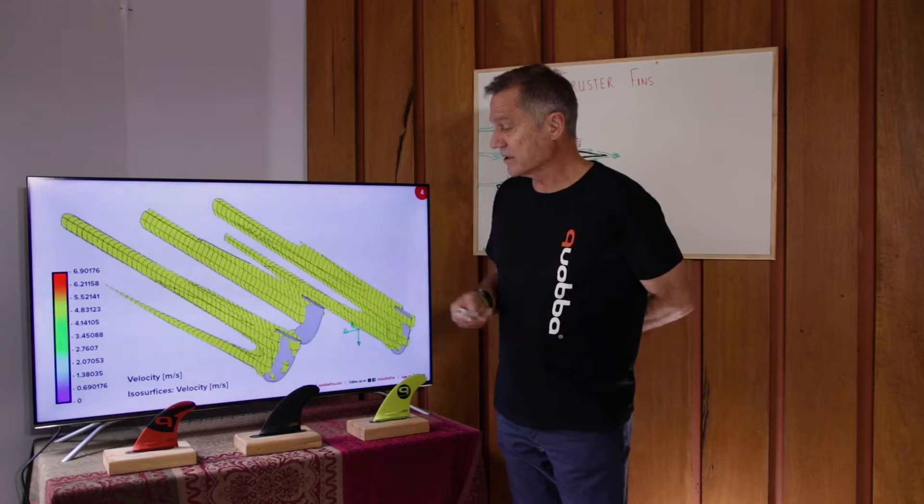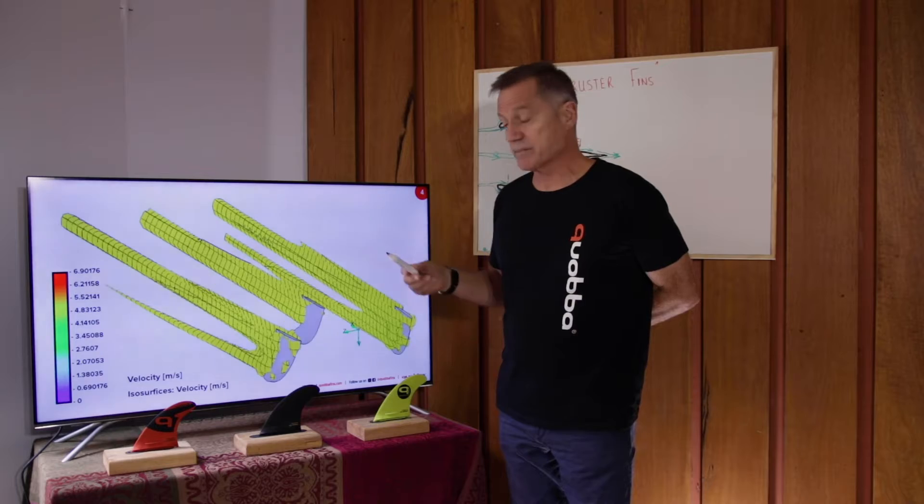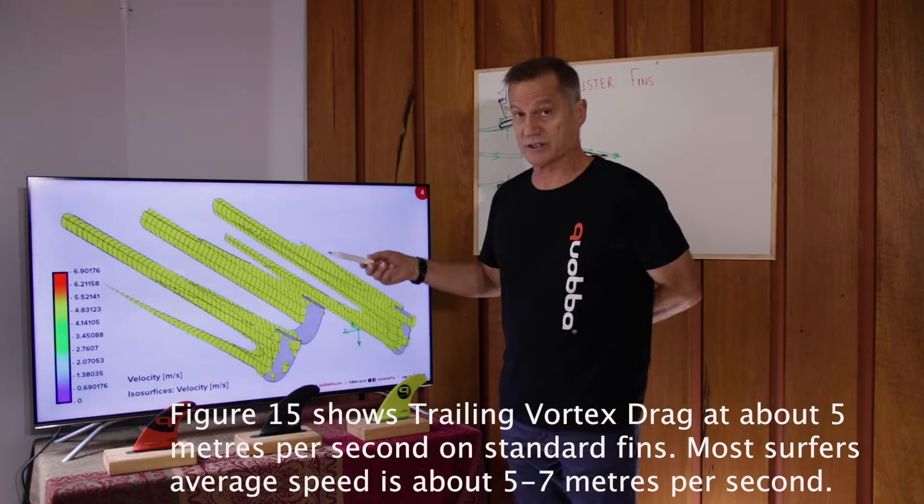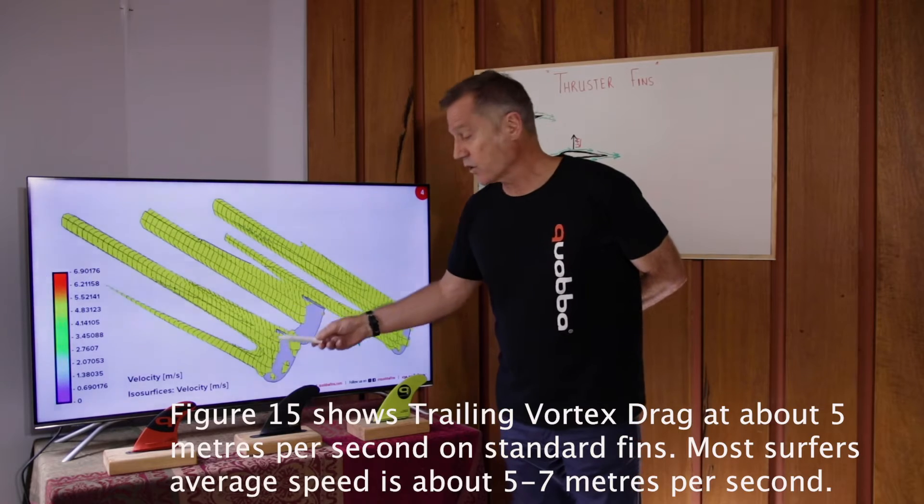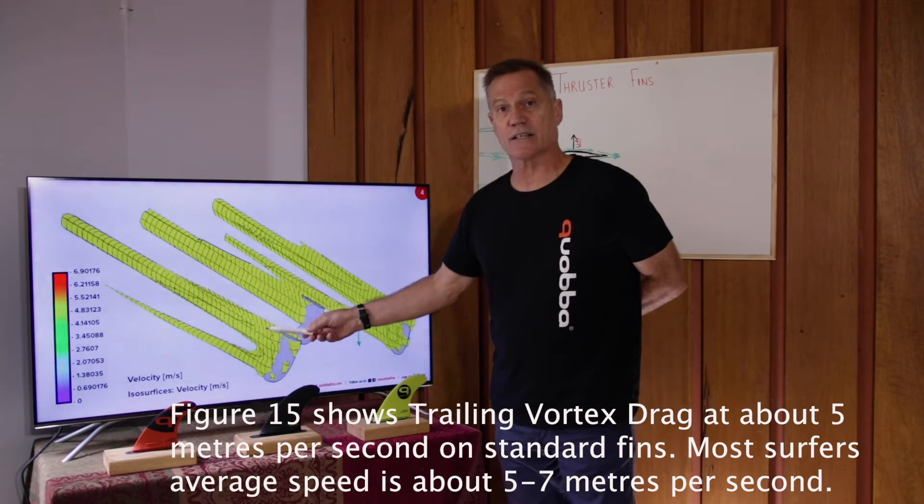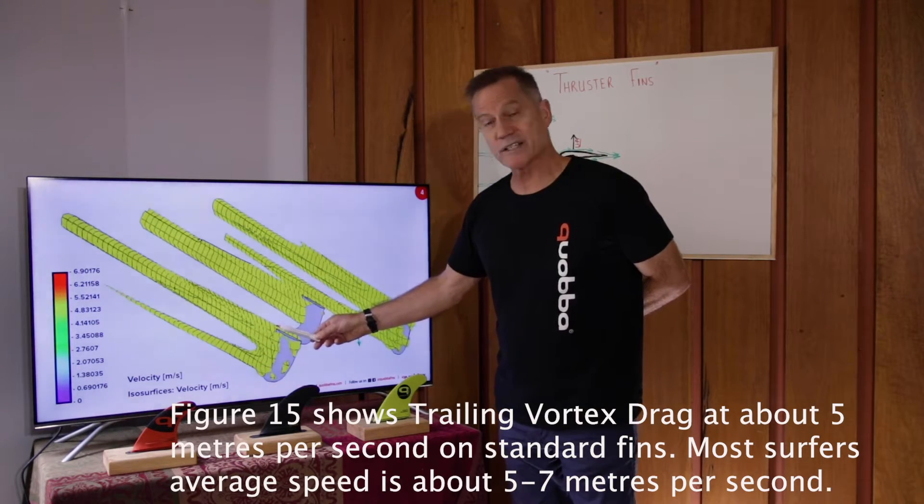Well, this CFD analysis clearly shows that at between 5 and 7 metres per second, and it gets worse as the speed goes up, most of the drag is not from the tip, it's from the base of the fin where the fin joins the surfboard.